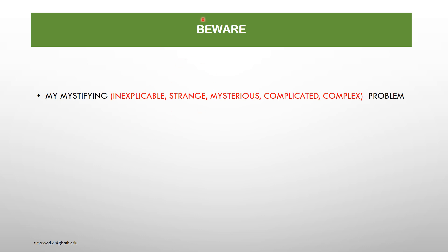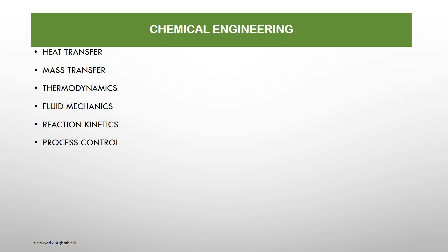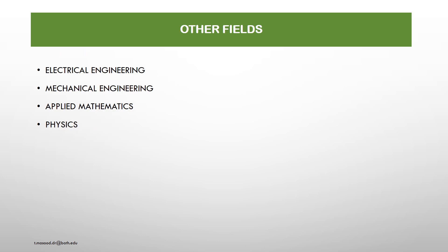Whenever we have to build and set up a building block of a process of optimization, we must know the complexity of the problems — whether the problem is complicated — and the intensity of the problem before executing any optimization process. We must know organic chemistry: transition metal chemistry, catalysis, surface chemistry, and other concepts. Then heat transfer, mass transfer, thermodynamics, fluid mechanics, reaction kinetics, and process control. Then electrical engineering, mechanical, and applied mathematical physics in order to accomplish the optimization process building block.